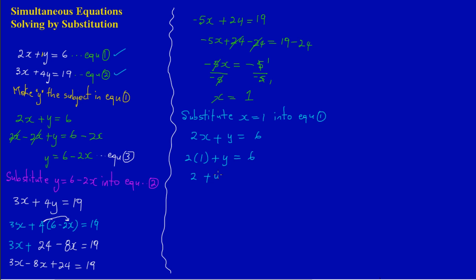2 times 1 is 2, so 2 plus y equals 6. Since 2 is being added, I subtract 2 from both sides. Positive 2 cancels with negative 2, leaving y equals 6 minus 2, which is 4. So y equals 4. Therefore, x equals 1 and y equals 4.